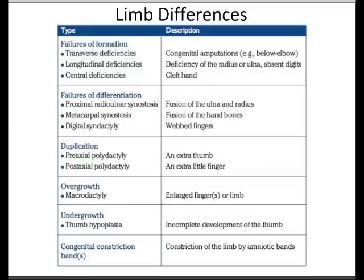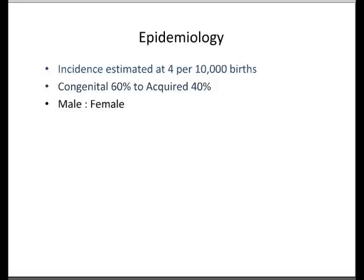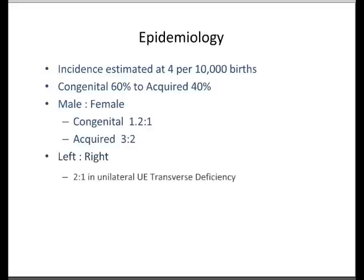In terms of epidemiology, the incidence is estimated at around 4,000 to 10,000 births. About 60% of limb deficiency is congenital and around 40% acquired. In terms of male to female ratios, it's slightly more predominant in males in both the congenital and acquired groups, at 3 to 2. It's often more on the left side in unilateral upper extremity transverse deficiency, which I'll go into later.